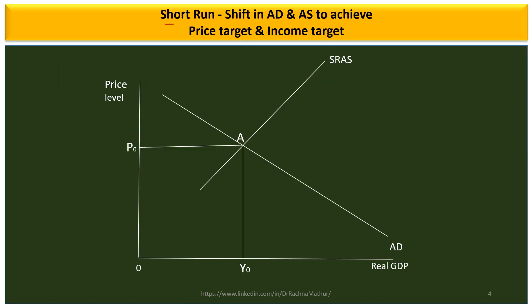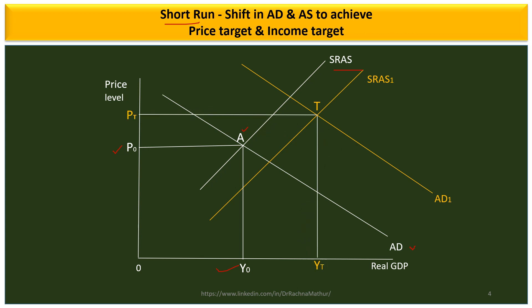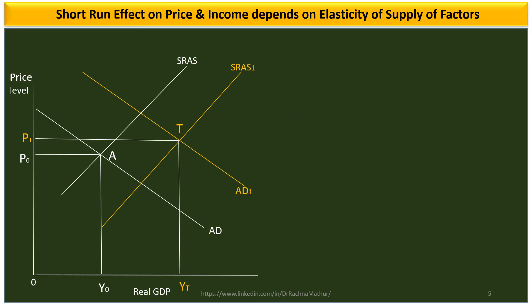In the short run figure, the short run aggregate supply is an upward sloping curve and aggregate demand is a downward sloping curve, leading to equilibrium at point A giving the initial price and initial income. Suppose aggregate demand increases to AD1 — aggregate supply adjusts and also increases in the short run, leading to a new equilibrium at point T giving the targeted price and targeted income. The effect on price and income depends on the elasticity of supply of factors of production.